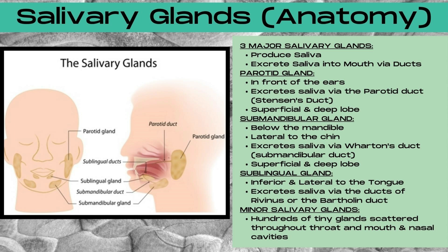Next up is the sublingual gland, located inferior and lateral to the tongue. It excretes saliva via the ducts of Rivinus or the Bartholin duct. There are also hundreds of tiny glands known as the minor salivary glands, scattered throughout the throat, mouth, and nasal cavities.